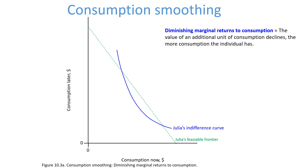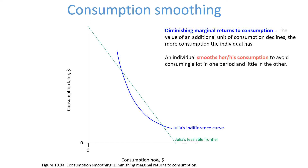In an intertemporal consumption choice, that means that the more the individual consumes now, the less utility she gets from consuming even more now. Because Julia's indifference curve has this characteristic of diminishing returns to consumption, she would prefer to smooth consumption — she wants to avoid consuming a lot in one period and little in the other.